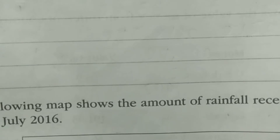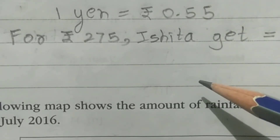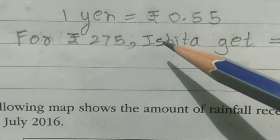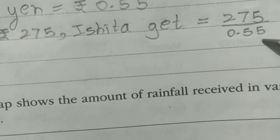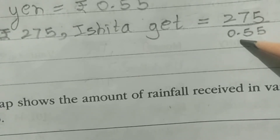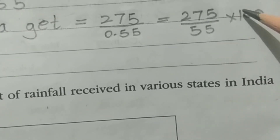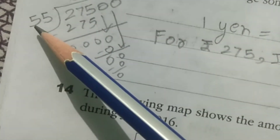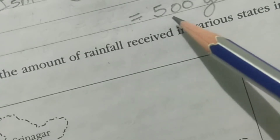The next question: Ishita wants to exchange some money for yen. How many yen can she get for rupees 275? Since 1 yen is equal to rupees 0.55, we need to convert rupees to yen, so we do division. Ishita gets 275 divided by 0.55. To remove the decimal, we write this as 275 divided by 55 multiplied by 100. So 55 fives are 275, giving us 500 yen.